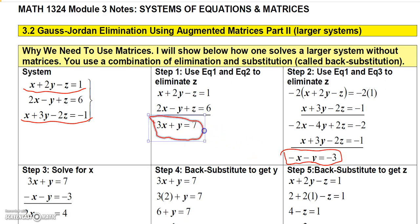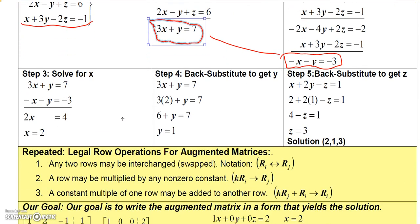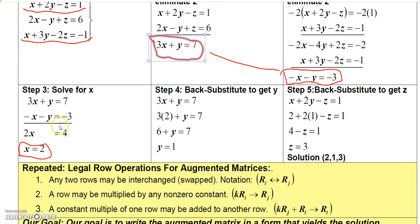So that gives me a second equation involving only x and y. Now I can take these two equations — 3x plus y equals 7 and negative x minus y equals negative 3 — and since this has plus y and this has minus y, I can just add them together and the y's cancel. 3x plus negative x is 2x, and 7 plus negative 3 is 4. So I get 2x equals 4, meaning x equals 2.